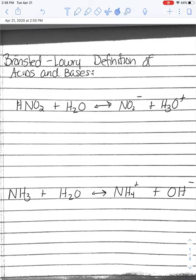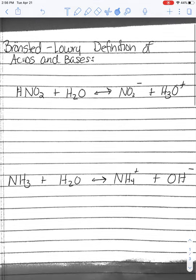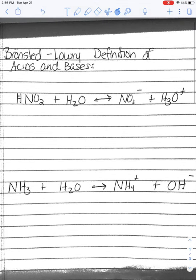Okay, so the next definition of acids and bases has been expanded by Bronsted-Lowry, two totally separate chemists working in different countries. Bronsted with his double dots over the O is Danish from Denmark, and Lowry was from England. Anyway, they expanded the definition of an acid and a base.